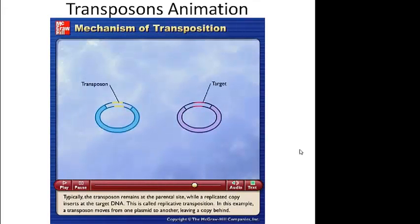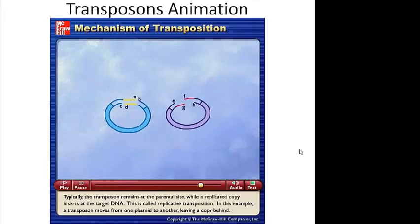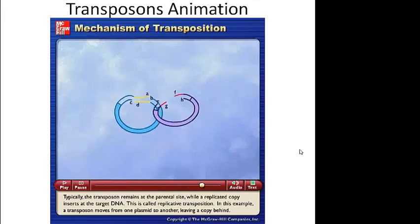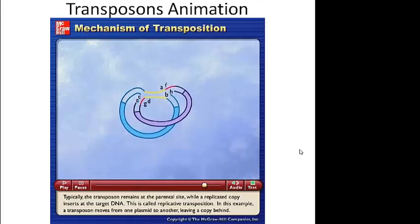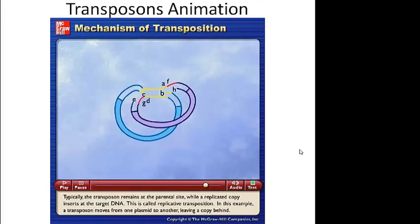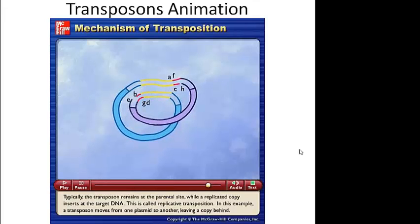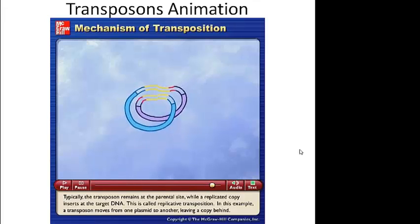Typically, the transposon remains at the parental site, while a replicated copy inserts at the target DNA. This is called replicative transposition. In this example, a transposon moves from one plasmid to another, leaving a copy behind.